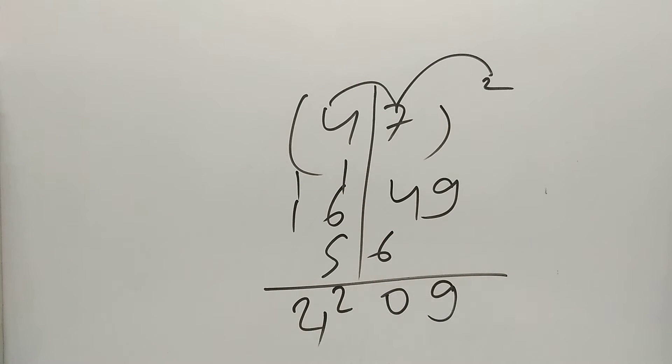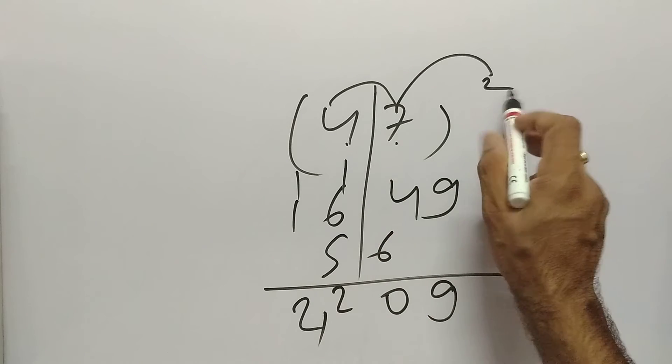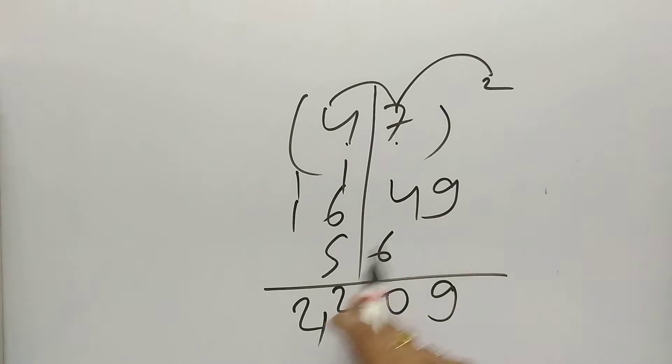I hope you can do this. 7 square 49, 4 square 16. After that 4 times 7. I hope you can do this.